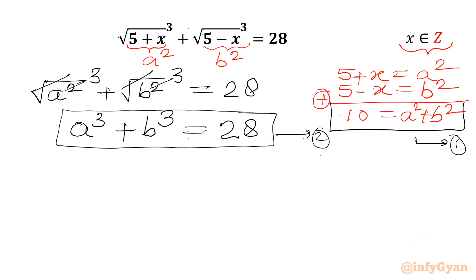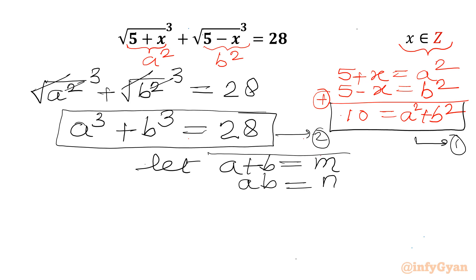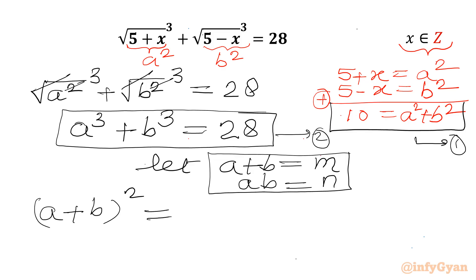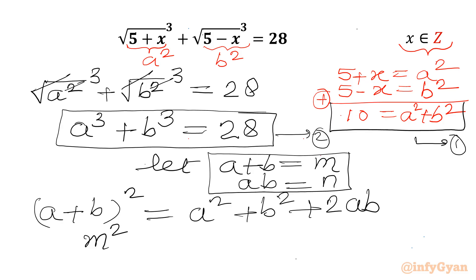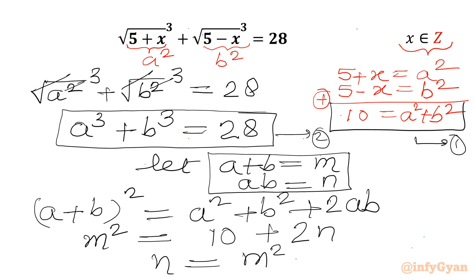Now I will assume a plus b equal to m and a times b equal to n. Let us expand a plus b whole squared: a squared plus b squared plus 2ab. So m squared equals 10 plus 2n, which gives n equal to m squared minus 10 over 2.